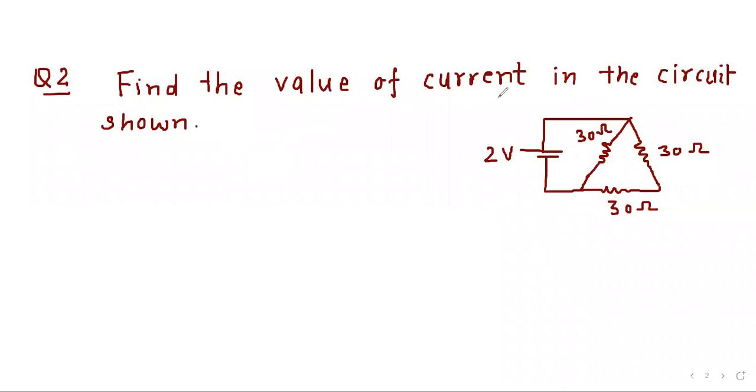Now consider next question. Find the value of current in the circuit shown. Here we will find out the equivalent resistance then we will apply Ohm's law. So equivalent resistance 30 ohm and these two are in series. So it will be 60 ohm.